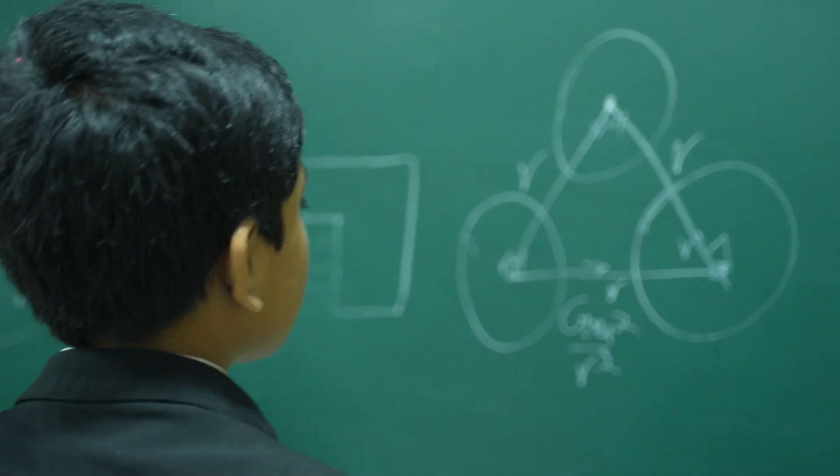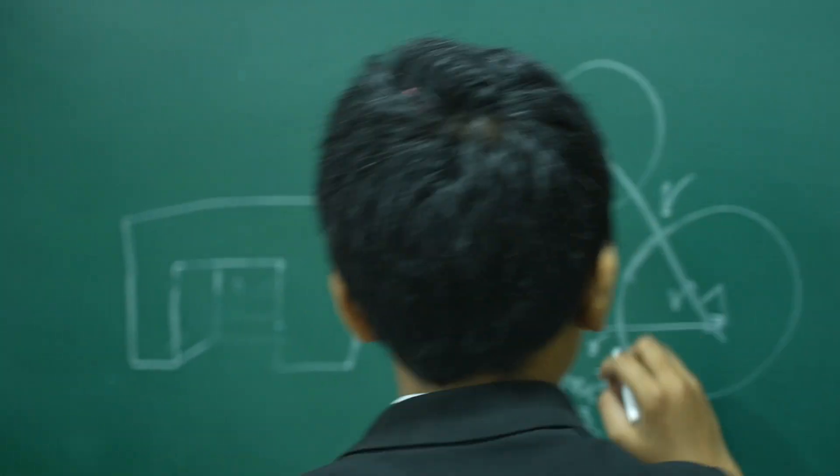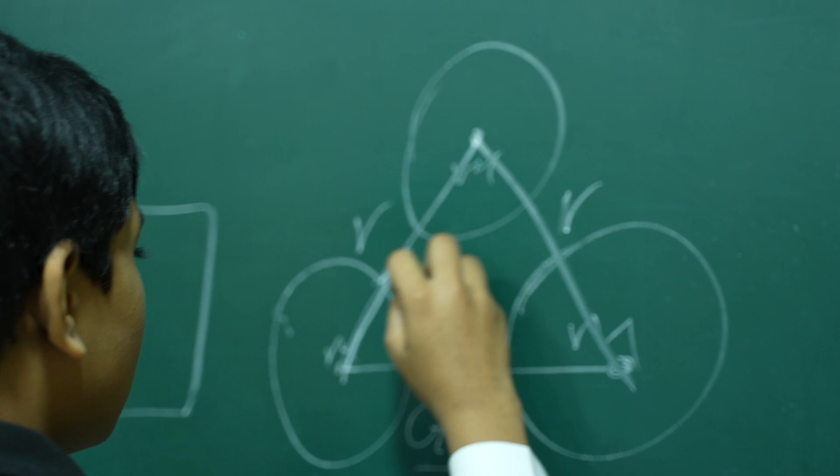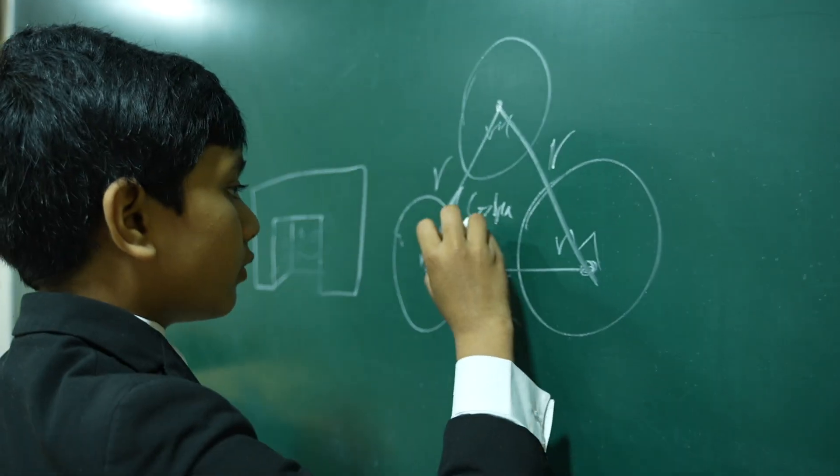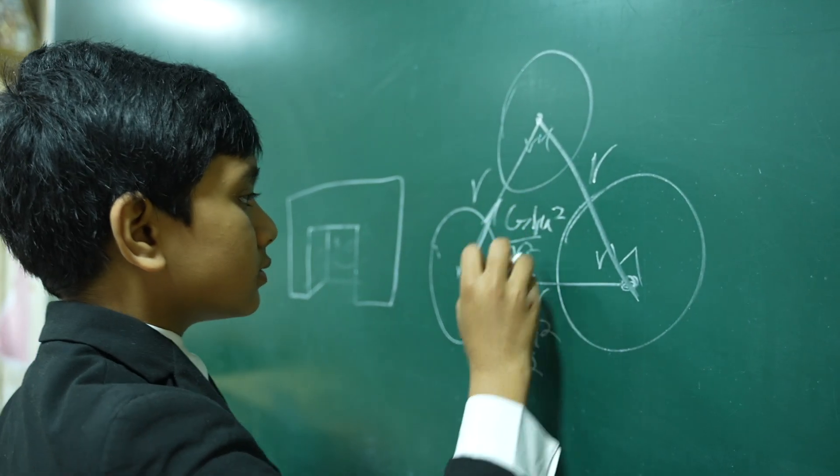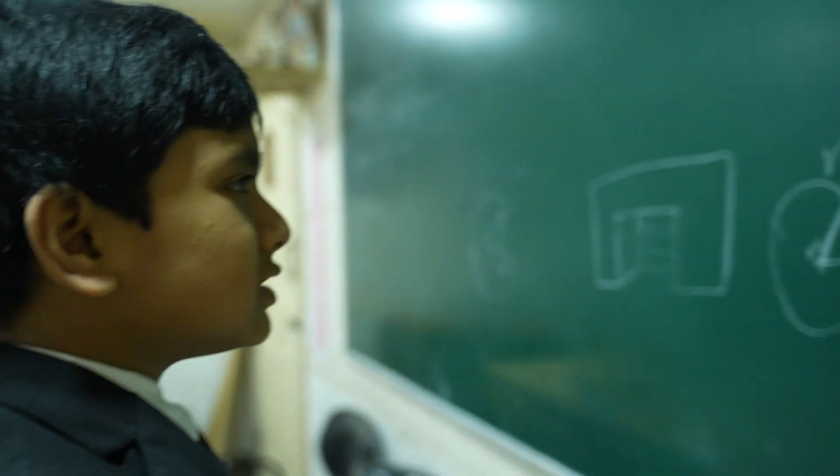GM squared over R squared. Here, the attraction is also GM squared over R squared. GM squared over R squared. So it's like a love triangle.